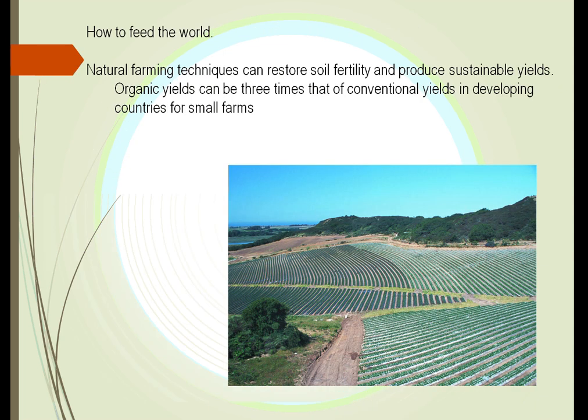We can feed the world, though. The amount of food being produced is getting better. We can go back to organic ideas — in some areas, using organic fertilizers can yield three times that of conventional yield. We can use different types of farming: contour farming follows the contours of the land and actually helps sustain water in the area. We also have no-till farming.